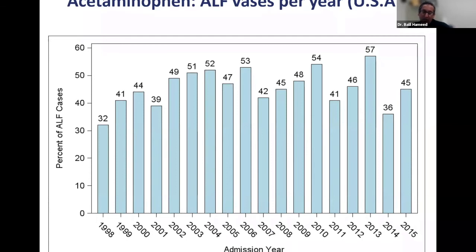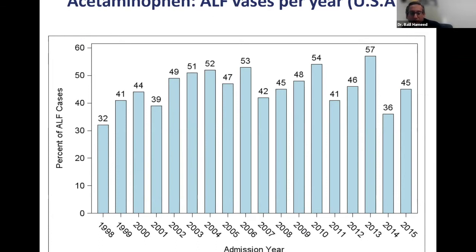This is what we call a problem of the Western world — an iatrogenic problem. In the U.S., most cases were either suicide attempts by young adults using acetaminophen, or what we call therapeutic misadventures. With the opioid epidemic, patients are using opioids for pain, and many opioid prescriptions contain acetaminophen. On top of that, they're taking extra acetaminophen, and this combination increases the level.